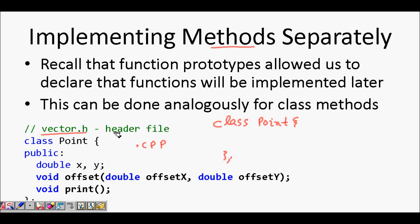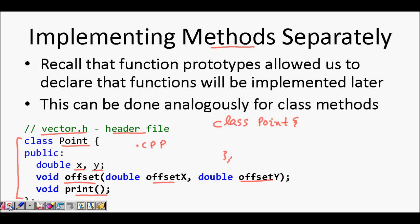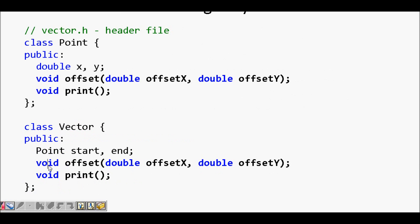This way your header file has just enough information so that you can understand what the class does. For example, taking the vector.h file — we have a class Point declaration with two data members x and y, then a member function 'offset' which takes arguments offset_x and offset_y, both doubles, and a member function 'print'.